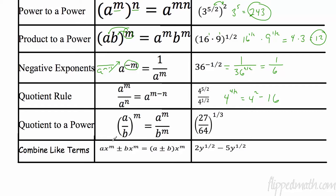This is quotient to a power, so I apply the exponent to every part. Remember, if the power is not written it's a one. So this is 27 to the one third over 64 to the one third. The cube root of 27 is three, and the cube root of 64 is four.